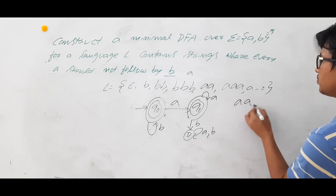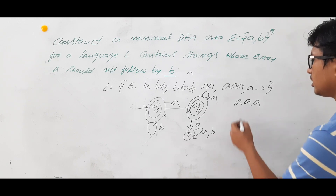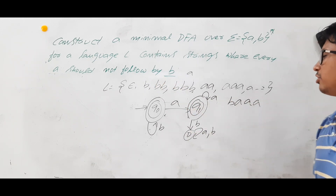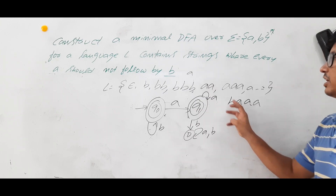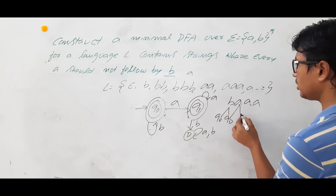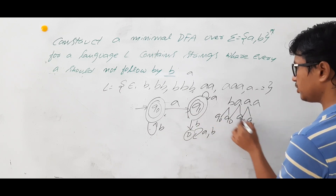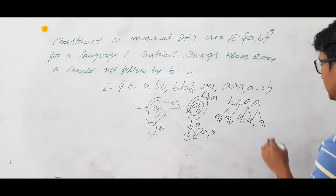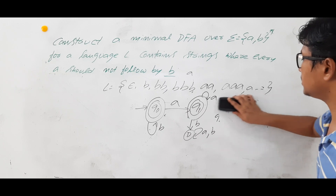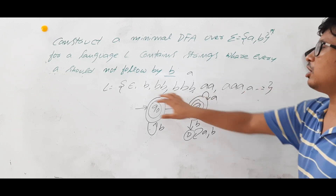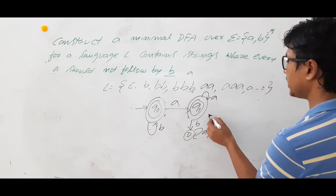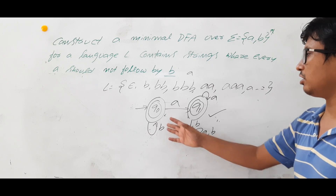Now let's verify string BAAA, which belongs to language L since A is not followed by B. Q0 on B stays at Q0. Q0 on A goes to Q1. Q1 on A stays at Q1, and Q1 on A stays at Q1 again. Q1 is a final state, so BAAA is accepted. Strings in L are accepted and strings not in L are rejected — so this is the minimized DFA for the given language L.